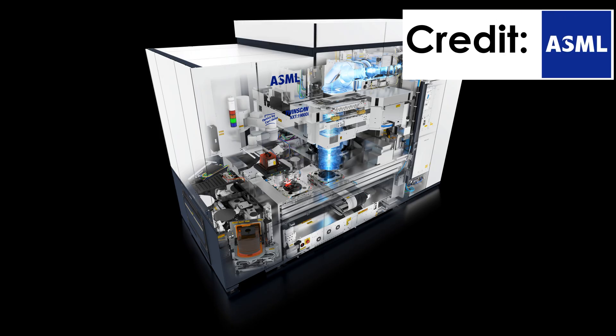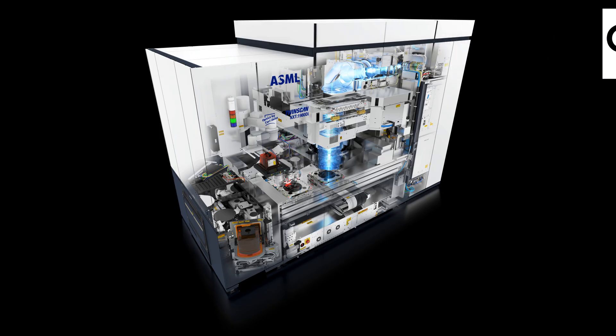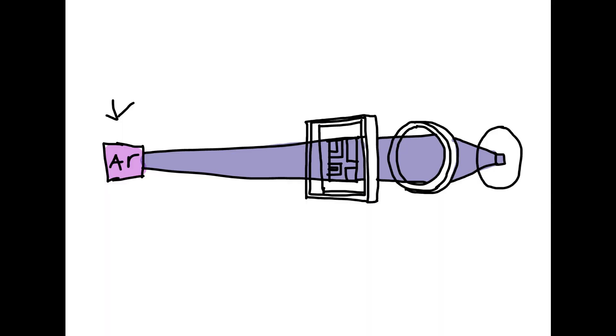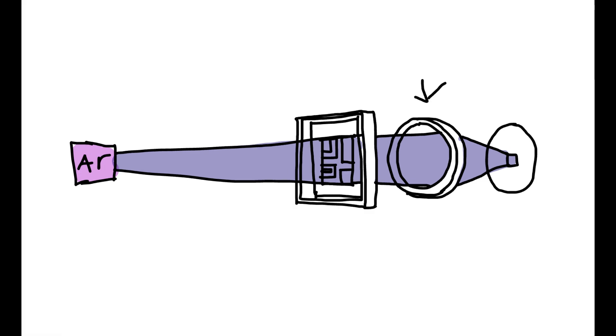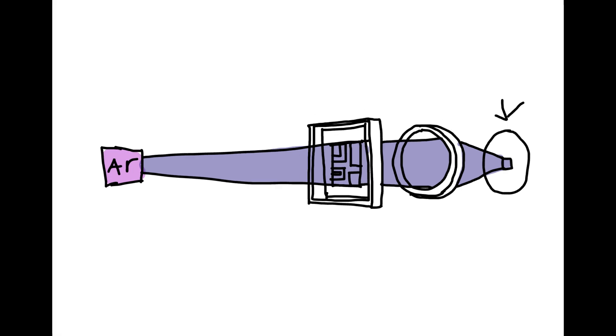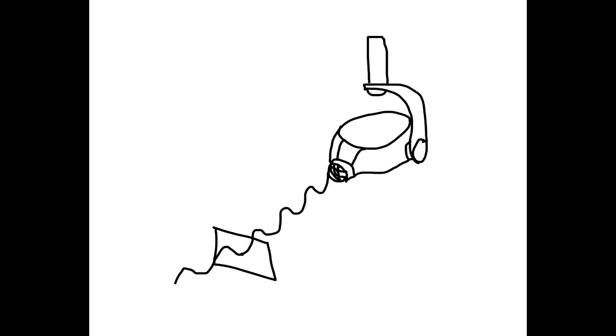Traditional DUV lithography uses 193 nanometer deep UV light. This is produced by pointing a laser through argon gas, which is then focused and directed to where it needs to be on the chip through a series of mirrors and lenses. The obvious solution is to use a lower wavelength of light. We can already produce much lower wavelength light like x-ray machines, but they have a problem. Higher frequencies of light will simply go through objects, so we cannot focus them with lenses and mirrors.